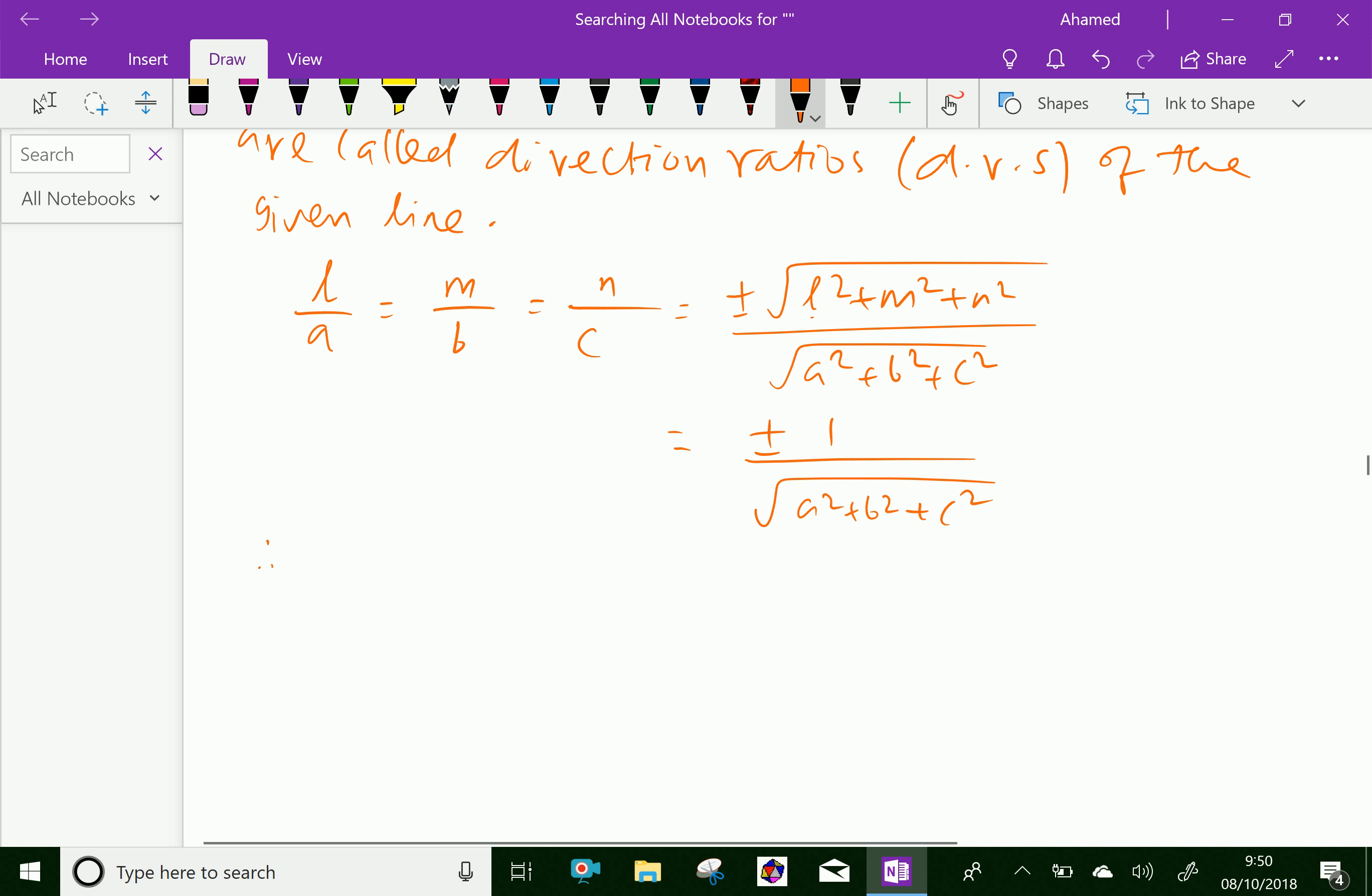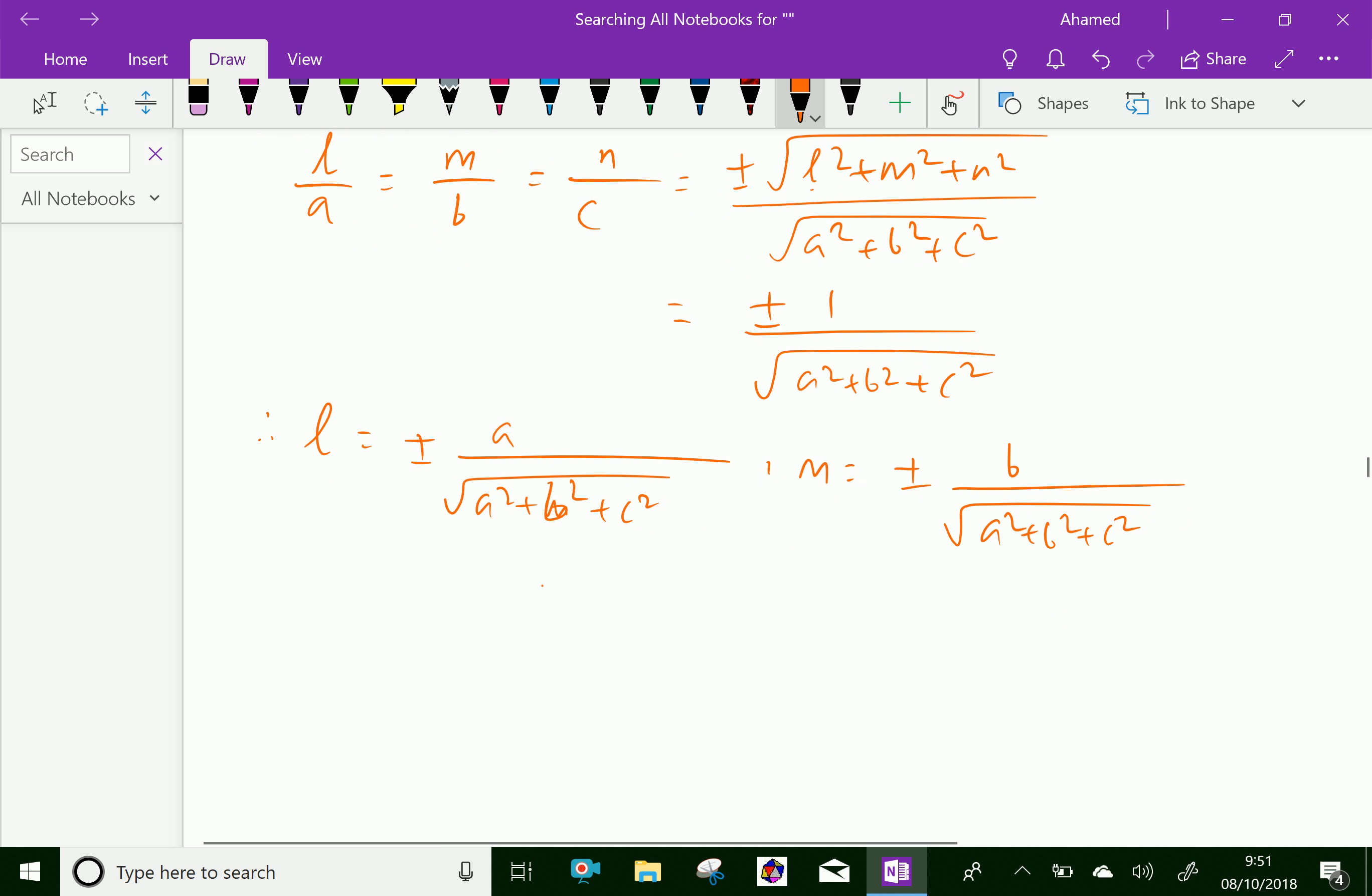Therefore you can write separately L equals plus or minus A over square root of A square plus B square plus C square, M equals plus or minus B over square root of A square plus B square plus C square, and N equals plus or minus C over square root of A square plus B square plus C square.